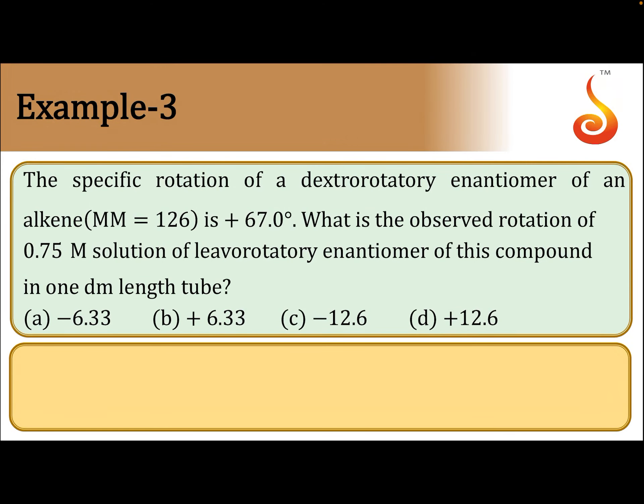The specific rotation of a dextrorotatory enantiomer of an alkene whose molecular mass is 126 is 67. What is the observed rotation of a 0.75 molar solution of the levorotatory enantiomer of this compound in a 1 dm length tube?